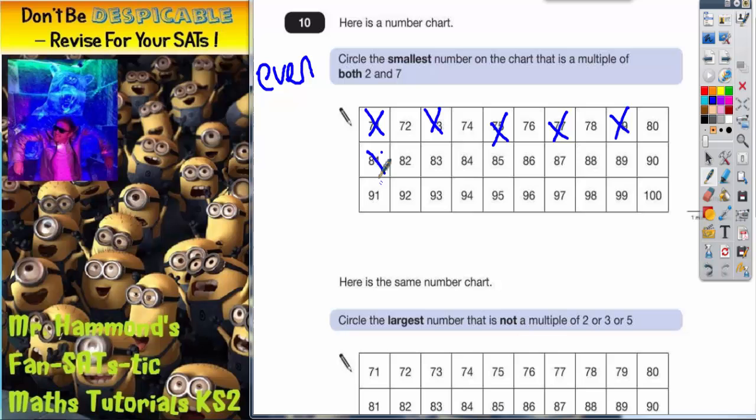81 and 91 are odd, 83 and 93 are odd, 85 and 95. 79 and 97. I've crossed out all the odd numbers, so only the even numbers are left. But it's also got to be a multiple of 7.